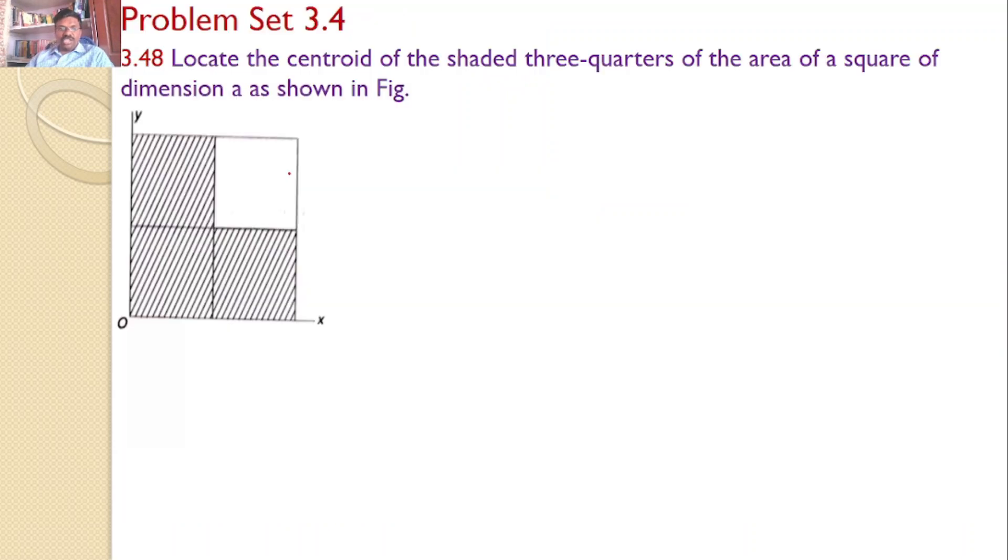Solutions to Engineering Mechanics 5th edition by Shenko. In this tutorial we will discuss problem set 3.4, problem number 3.48. Locate the centroid of the shaded three-quarters area of a square of dimension A as shown.